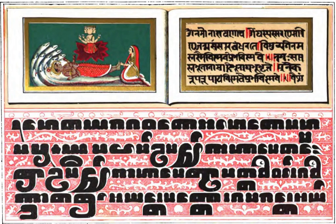T.W. Rhys Davids in his book Buddhist India, and Wilhelm Geiger in his book Pali Literature and Language, suggested that Pali may have originated as a lingua franca or common language of culture among people who used differing dialects in North India, used at the time of the Buddha and employed by him. Another scholar states that at that time it was '...a refined and elegant vernacular of all Aryan-speaking people.' Modern scholarship has not arrived at a consensus on the issue. After the death of the Buddha, Pali may have evolved among Buddhists out of the language of the Buddha as a new artificial language.